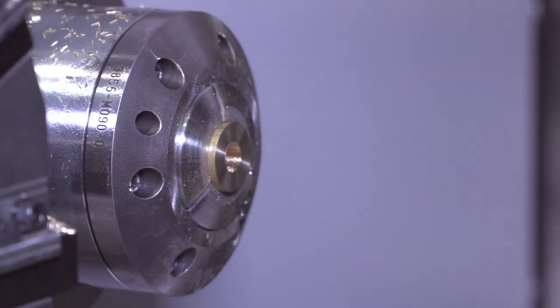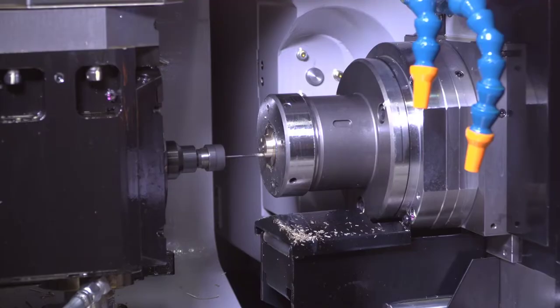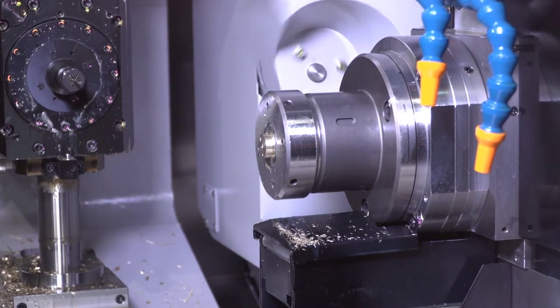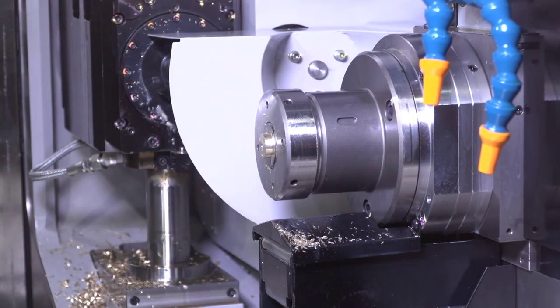The machine comes equipped with a 60 tool changer magazine. Also, as an option, you can get a 118 tool magazine for the machine.